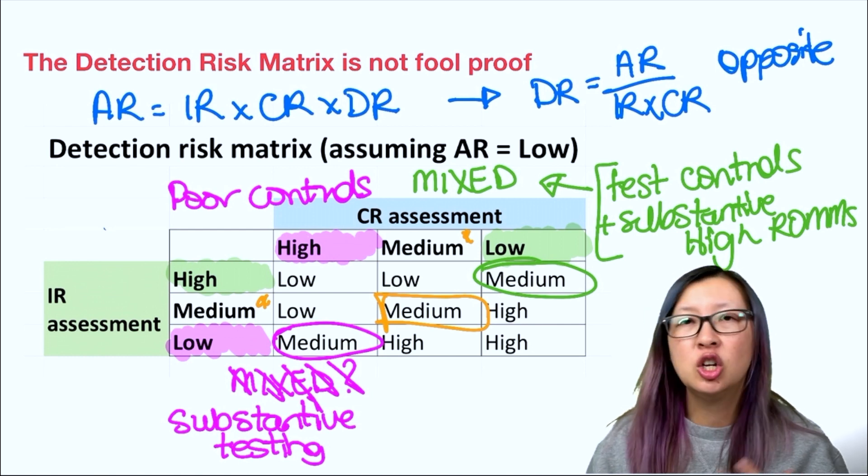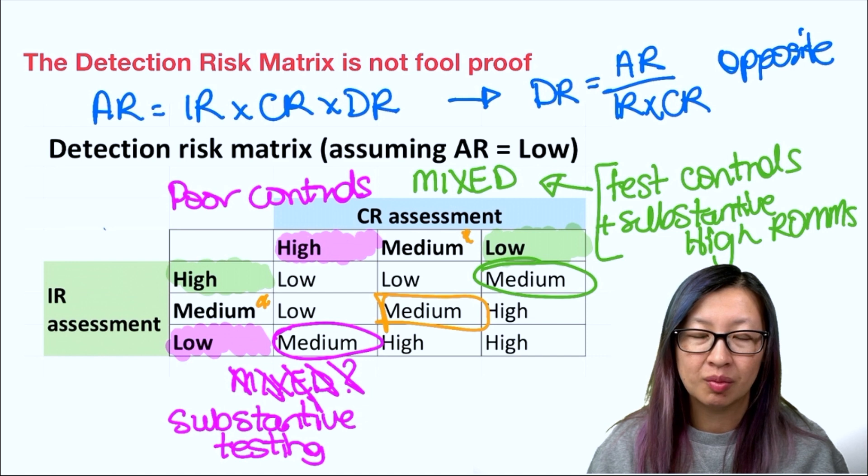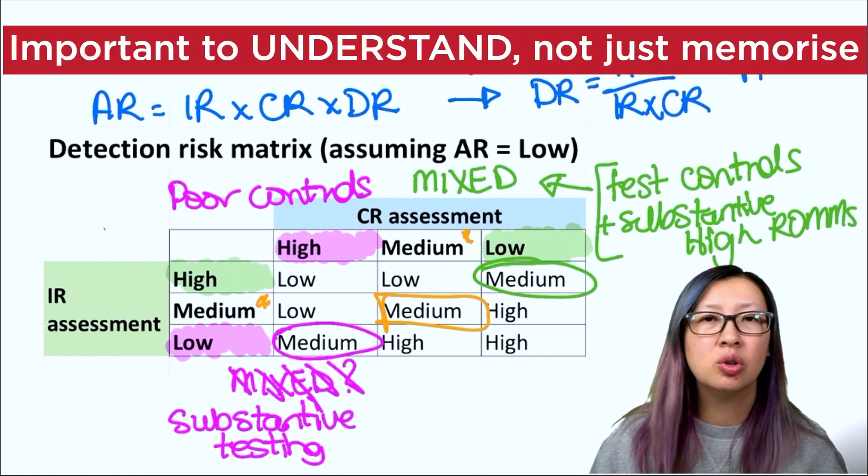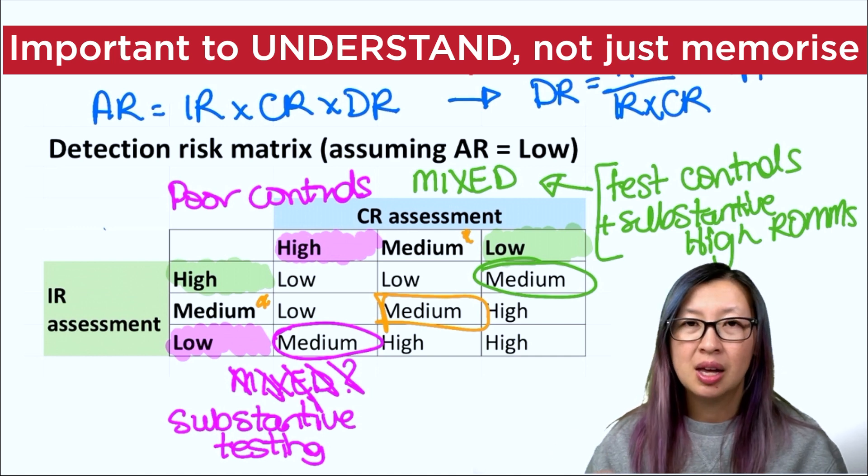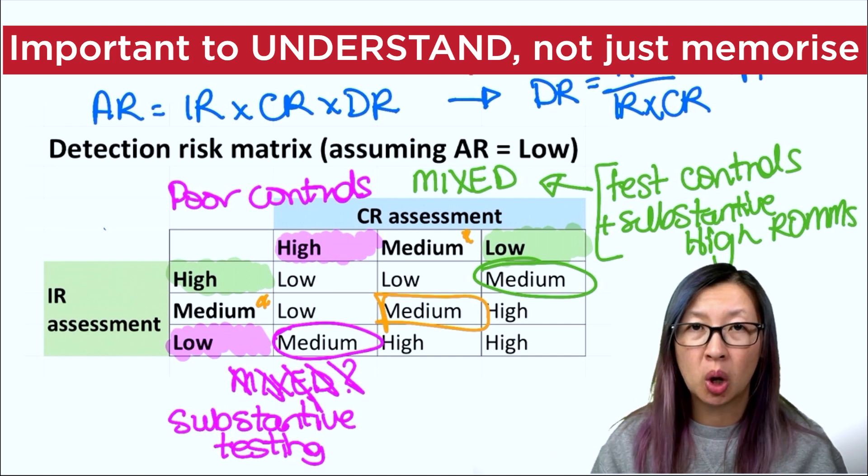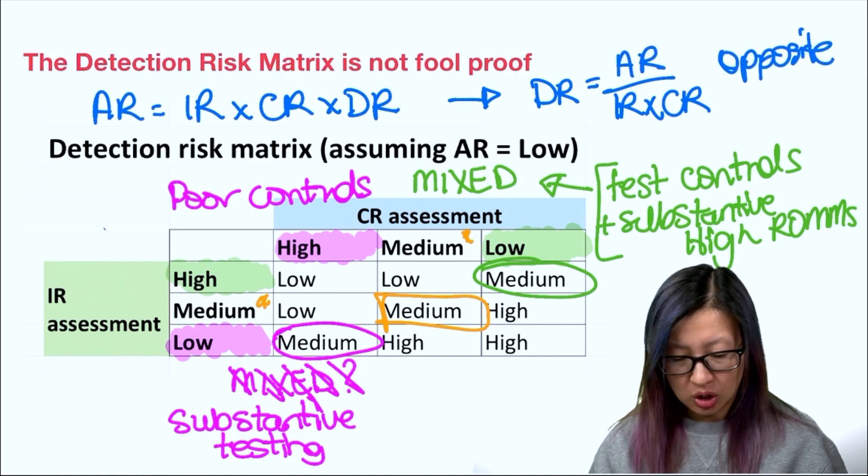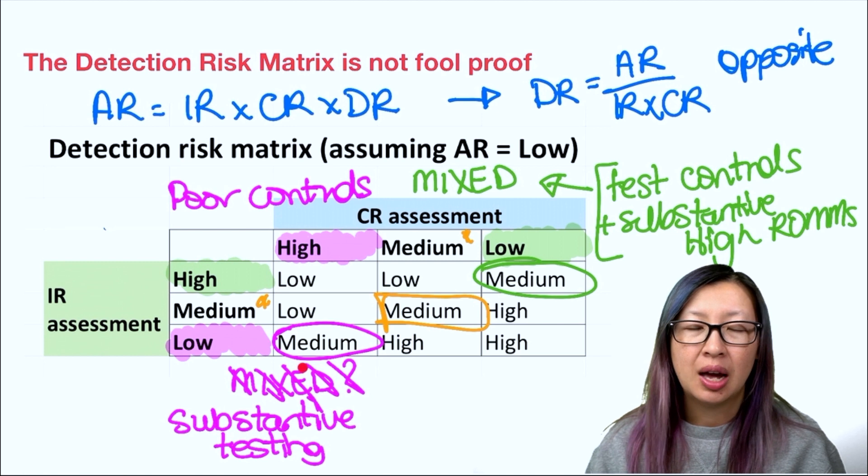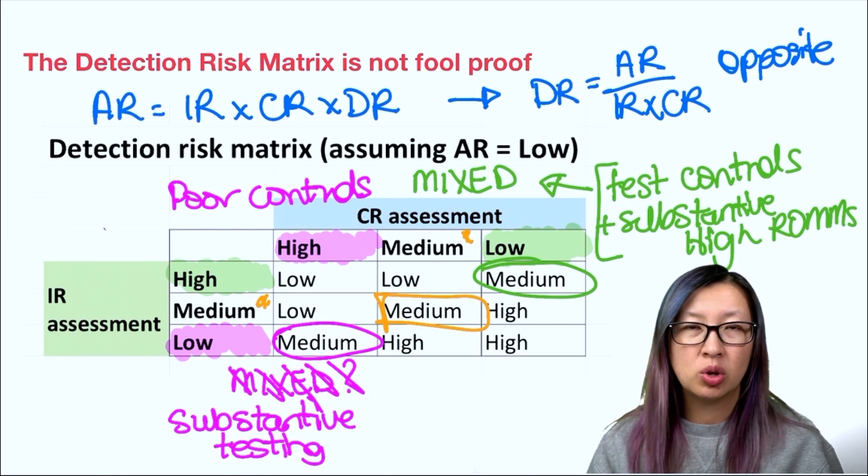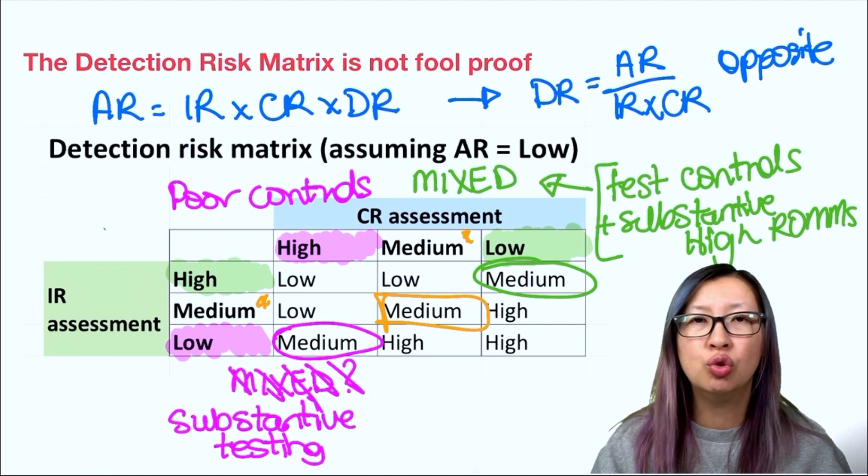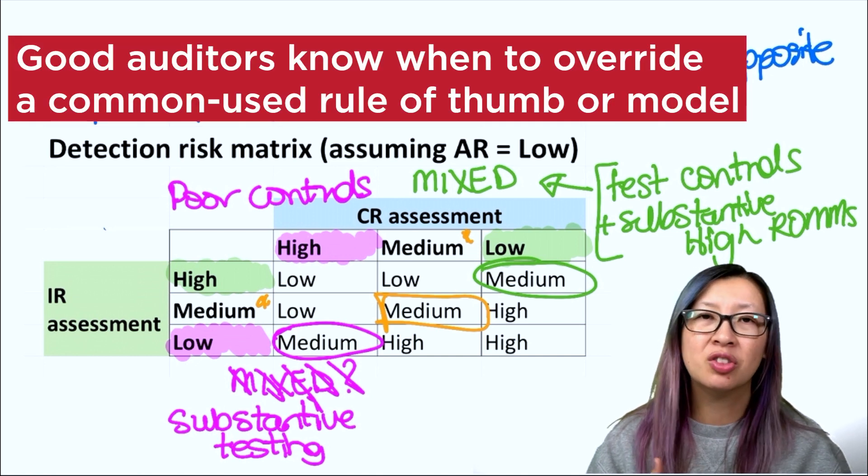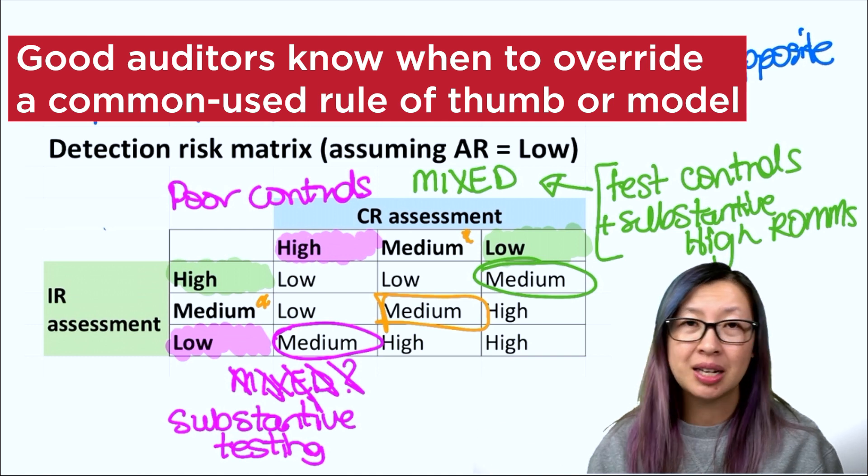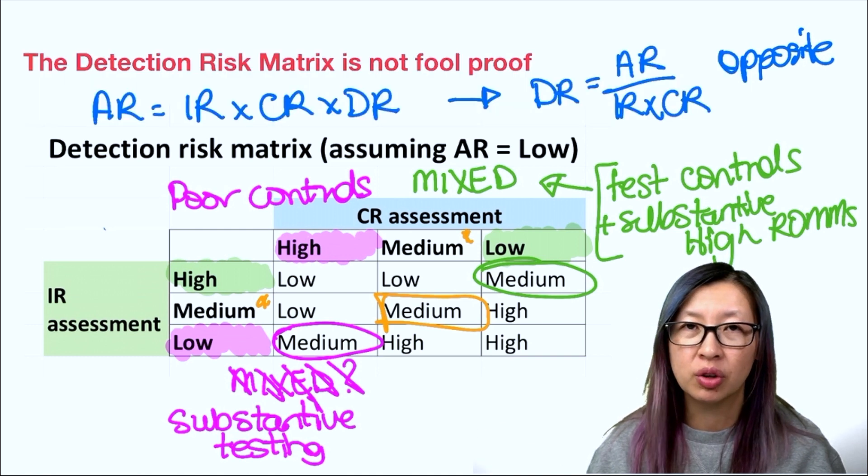So this is why it's really important to not just know the audit risk model and know the detection risk matrix, but it's important to understand the components and how the model works. So that in instances like this one over here in the pink, it's really important to know when you might need to override the model, when the generic rule of thumb doesn't actually apply. And this can apply to everything in audit.